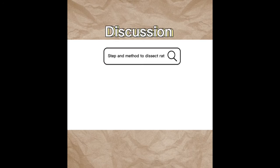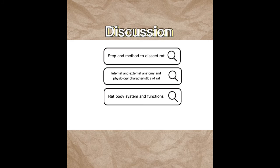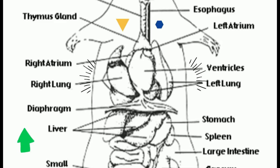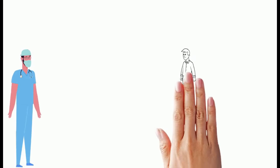In this session, I will first talk about the steps and method to dissect a rat, then explain the internal and external anatomy of the rat, while also explaining the function of each body system. After that, I will proceed to the physiological characteristics of the rat, and finally cover the moral and etiquette guidelines on how to dissect a live specimen.